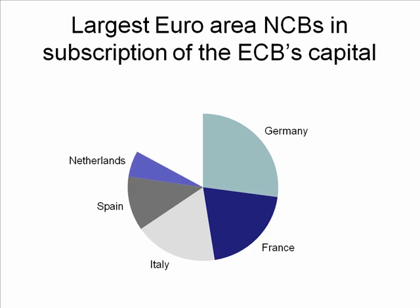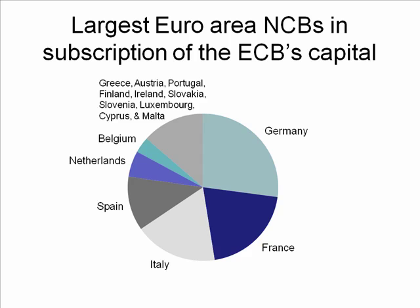Then we have a couple of other ones — Netherlands and Belgium — and then all the rest are less than 3% of the overall. All the rest of them: Greece, Austria, Portugal, Finland, Ireland, Slovakia, Slovenia, Luxembourg, Cyprus, and Malta. What I did here is I layered the data. I started with an overall view showing the two proportions, and then I took one of those proportions and broke that down to look at the major players in that area.